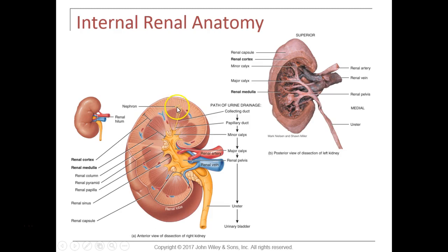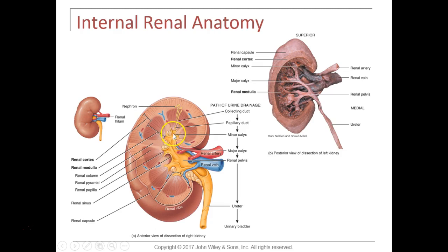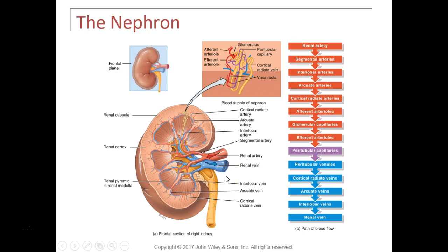Extending from the cortex down into the medulla are the functional units of the kidney called nephrons. The nephrons perform three physiological tasks to produce urine, which is collected out of the tip of each pyramid at the renal papilla through an opening called a minor calyx. Minor calyces join together to form a major calyx, and the major calyces join to form the renal pelvis. Urine then leaves the renal pelvis into the ureter, which carries it down to the urinary bladder.